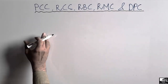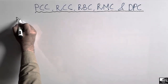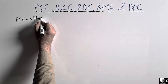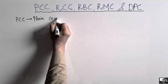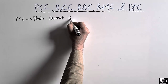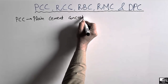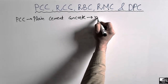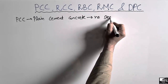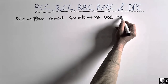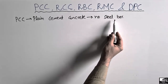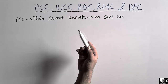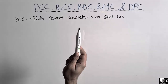The first term is PCC. The abbreviation stands for Plain Cement Concrete. It is the type of concrete where we use no reinforcement bar — there is no steel bar used in such type of concrete. This means that this type of concrete is used for really low load structures.